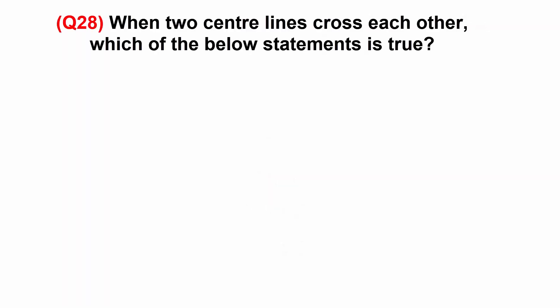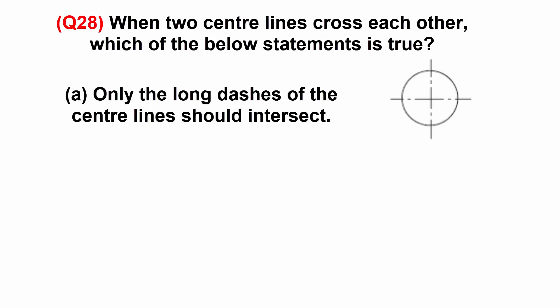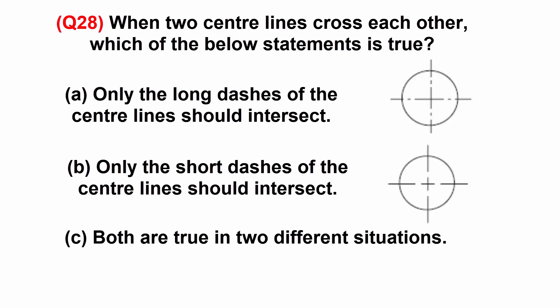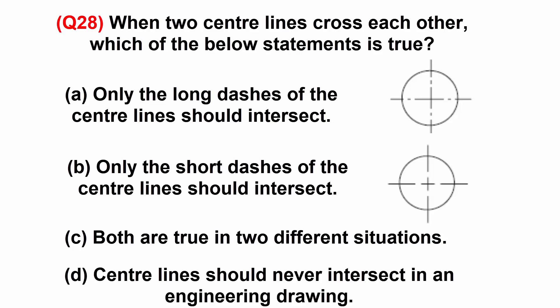When two center lines cross each other, which of the below statements is true? A: only the long dashes of the center lines should intersect. B: only the short dashes of the center lines should intersect. C: both are true in two different situations. Or D: center lines should never intersect in an engineering drawing.